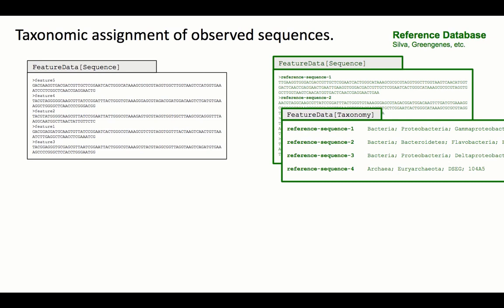In a perfect world, we could take the sequences from our FeatureData Sequence artifact obtained from DADA2 or DBLUR, search for that sequence inside our set of reference sequences, and when we find a match, take that label and look it up in the taxonomy file — that would tell us which species that particular sequence came from. Sadly, in the real world it's more complicated because we have natural variation and noisy sequencing, and the particular critter in your sample might not be in your reference database.